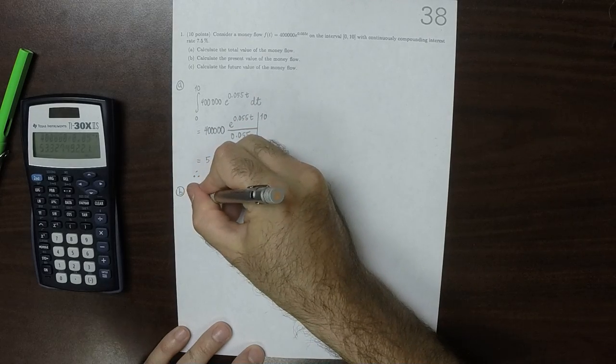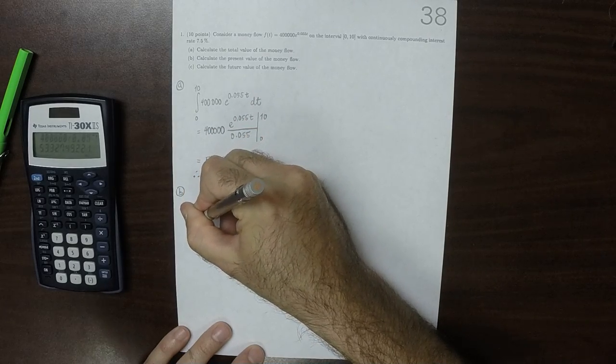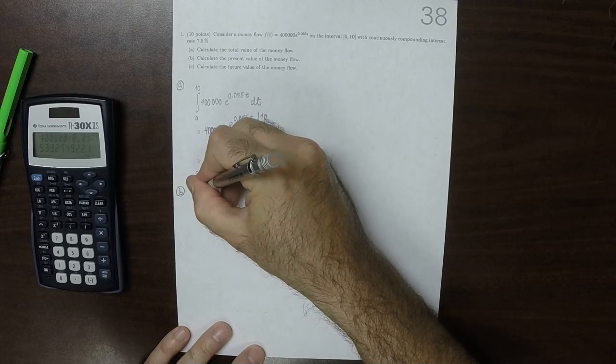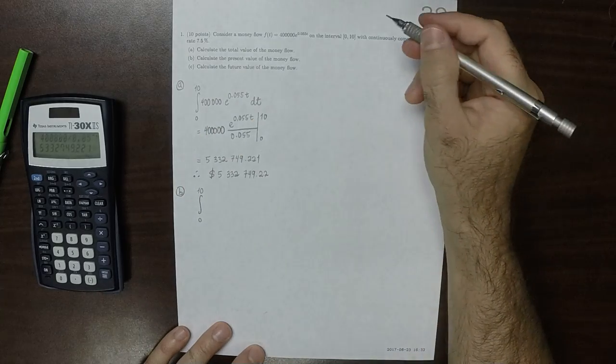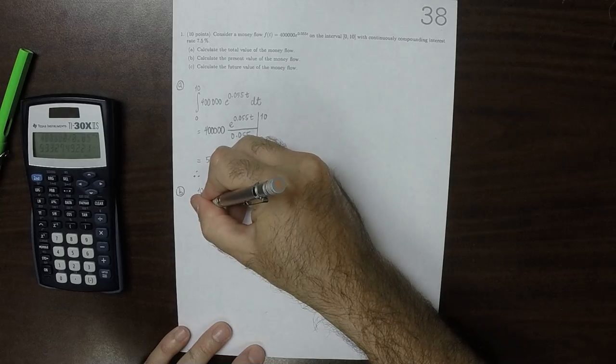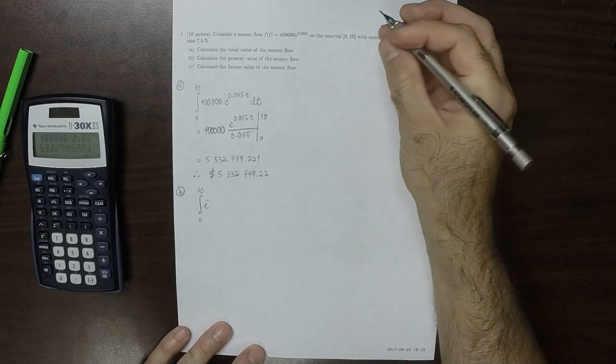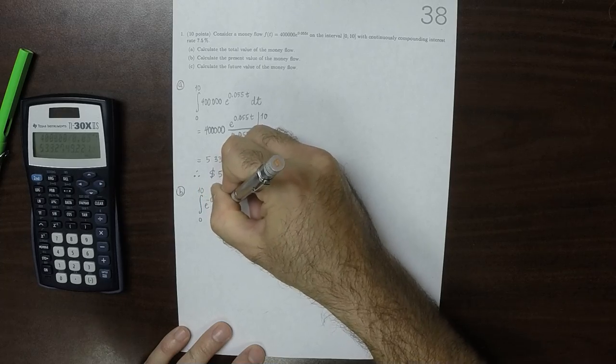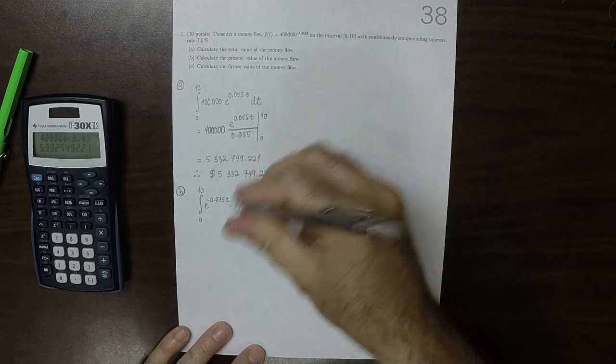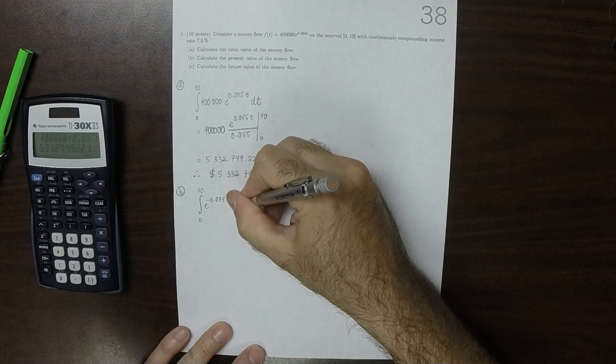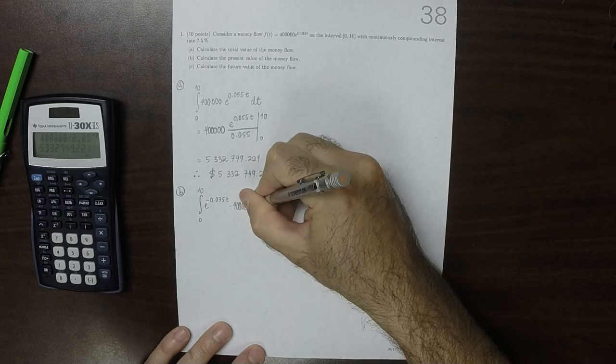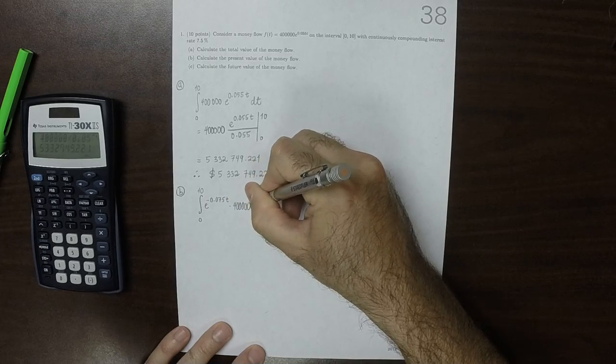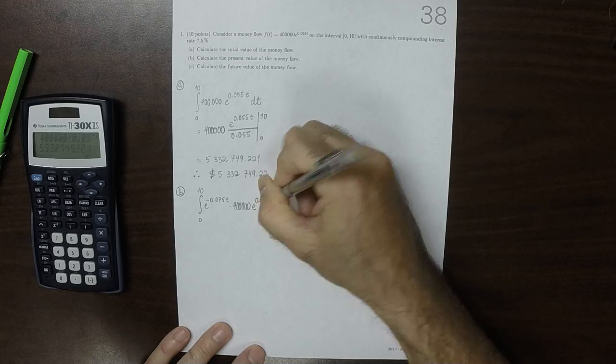So in this case, it's integral 0 to 10, and then exponential negative the interest rate, 0.075t, and then multiplied by the flow, 400,000 exponential 0.055t dt.